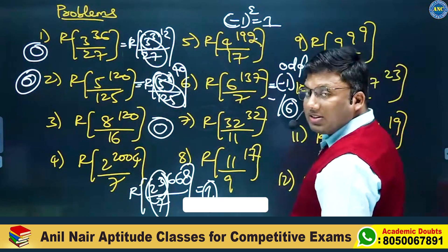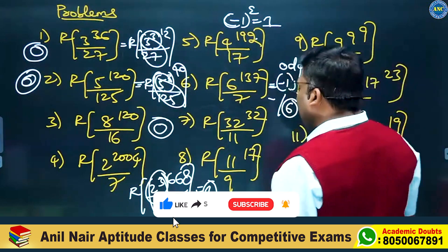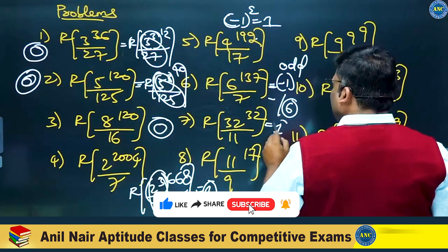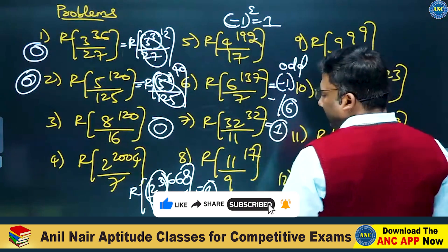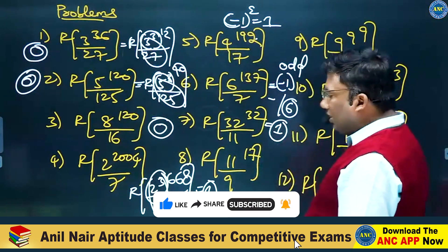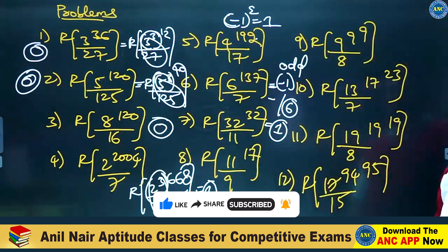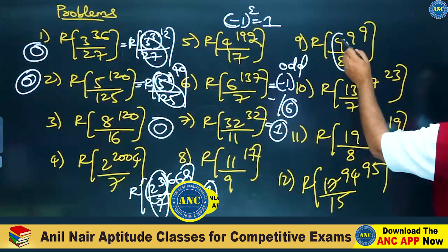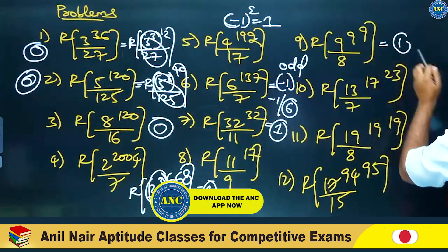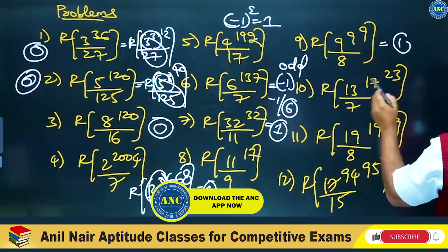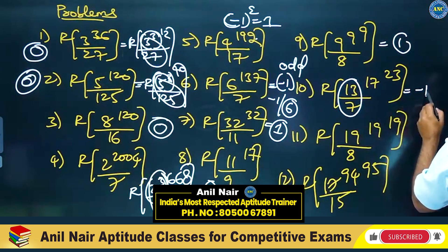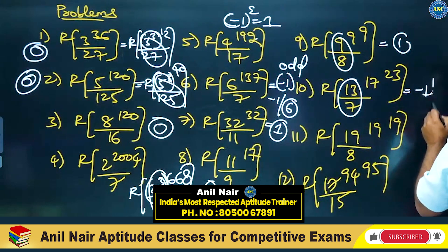11 threes are 33. Minus 1 power even number is plus 1. Easy problem first: 8 ones are 8. 1 power any number is 1. 7 twos are 14. Minus 1 power odd is minus 1. Positive remainder.